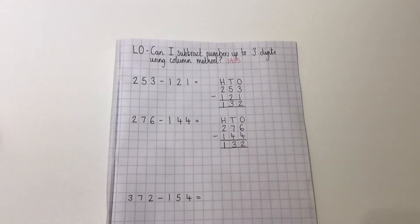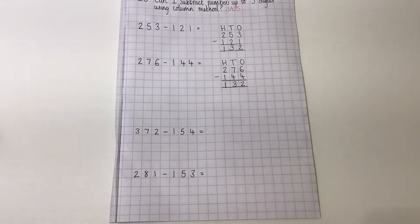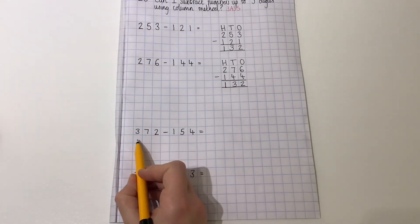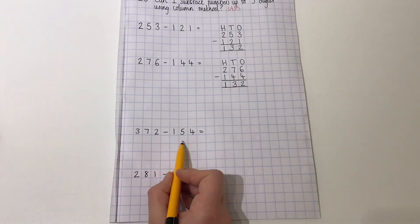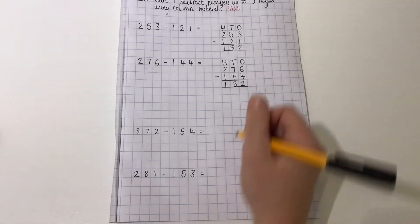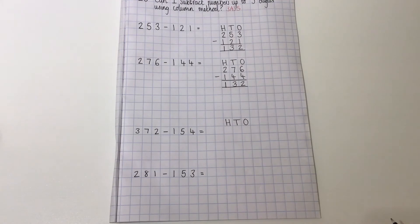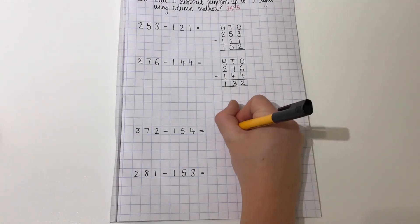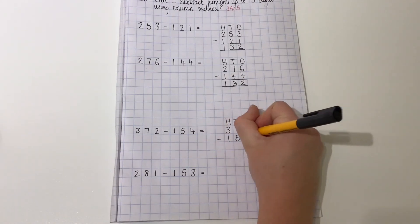So now we are going to be revising column method for subtraction with regrouping for up to three digit numbers. You might also know it as borrowing, carrying or stealing. So I've got my subtraction question here: 372 take away 154. Again, both of these numbers are three digits, so I know I'm working with the hundreds, the tens and the ones. Just like before, the biggest number comes first, so we put 372 take away 154.